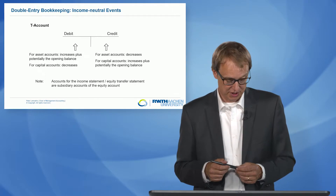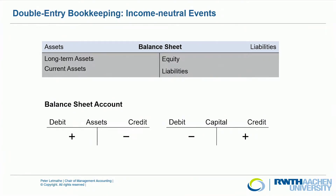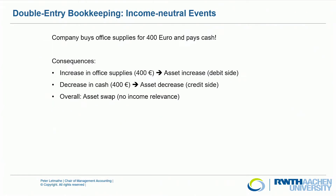Here again is the structure of the balance sheet. For asset accounts, increases are on the left side and decreases on the right side, on the credit side. Just the opposite for capital accounts: decreases on the debit side and increases on the credit side. Let's now look at some example book records.